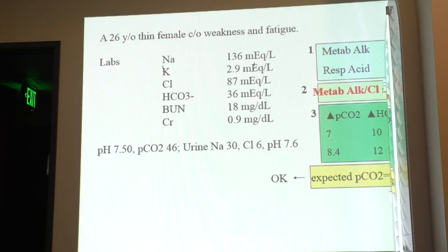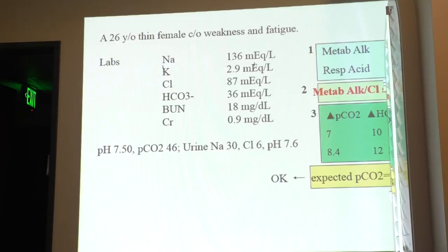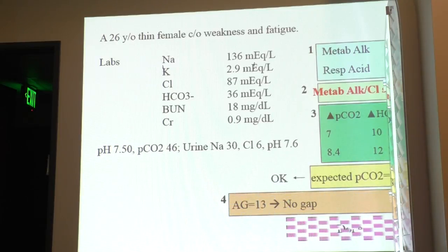Then we do the anion gap: 136 minus 87 minus 36 — wait, that's sodium minus chloride minus bicarb. So sodium 136 minus chloride 87 minus bicarb 36 gives us 13. So no gap, because 10 to 12 means no gap.